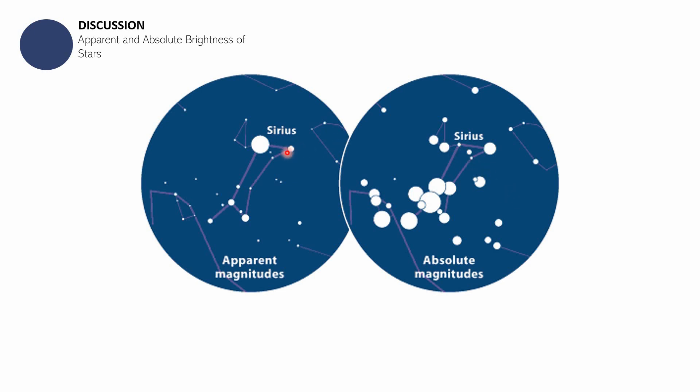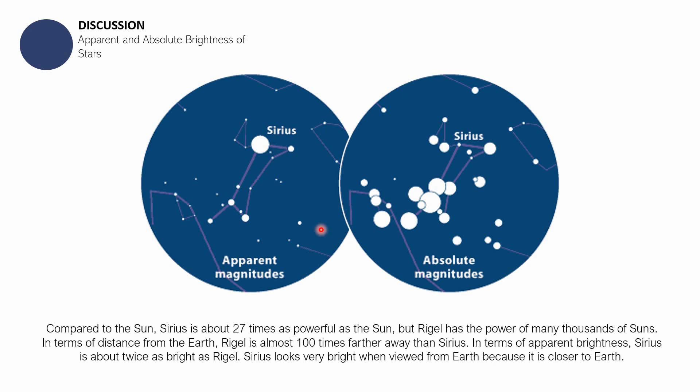Apparent brightness, kung titingin ka sa sky on a clear night sky, makikita mo Sirius is the brightest star. Pero, kung magkakaroon sila ng equal distance sa planet Earth, ganito yung makikita mo. Super bright ng mga ibang stars that seem to be less bright compared to Sirius.